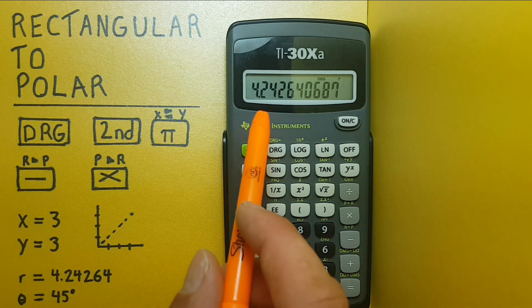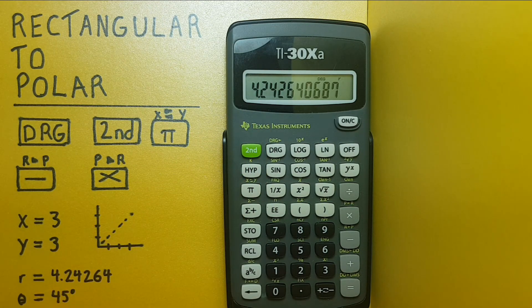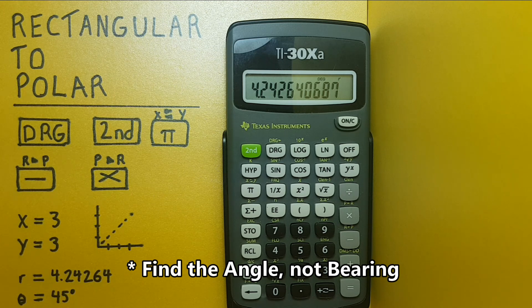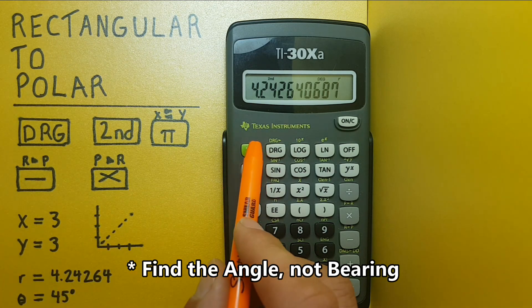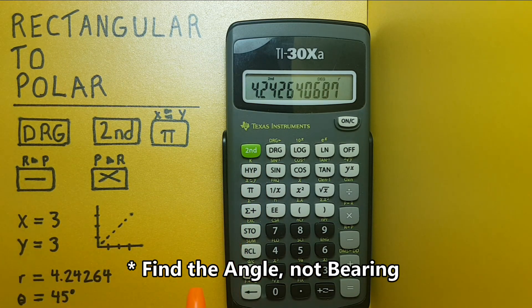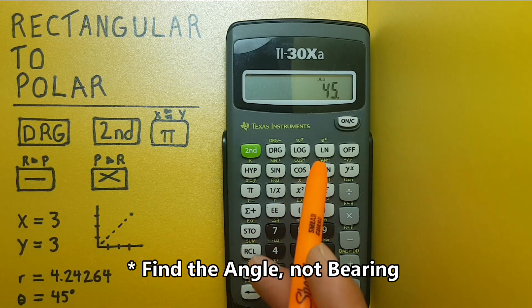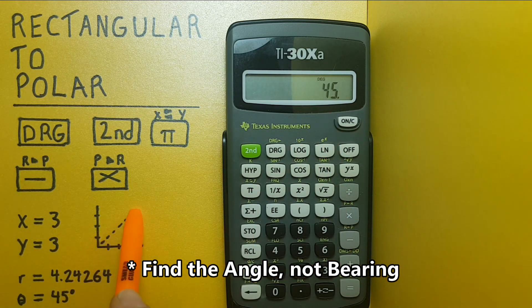This gives us our straight line distance along here, which is 4.24264, etc. And if we want to find the bearing, we go second function x to the y, and this gives us 45 degrees, which looks right.